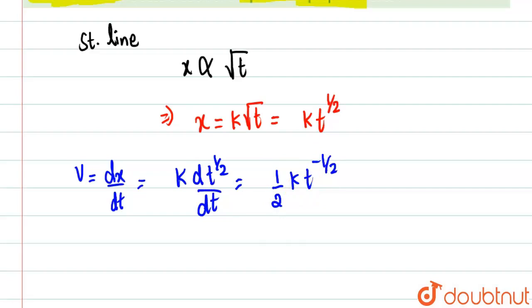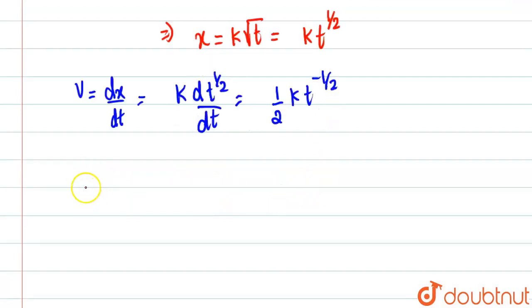Similarly, now what we'll do, now we will find out acceleration. So if you see, acceleration is what - acceleration is nothing but dv by dt, which is differentiation of velocity.